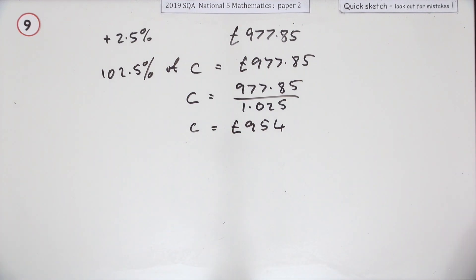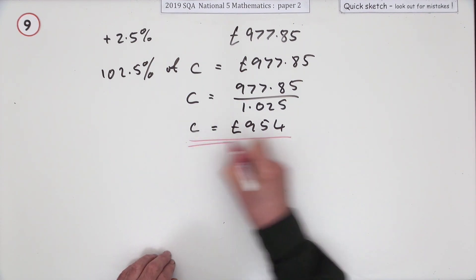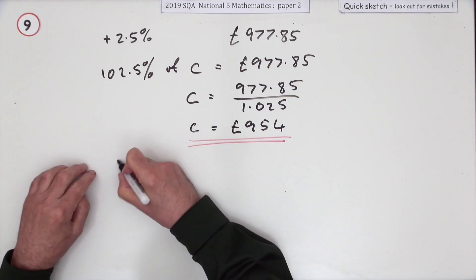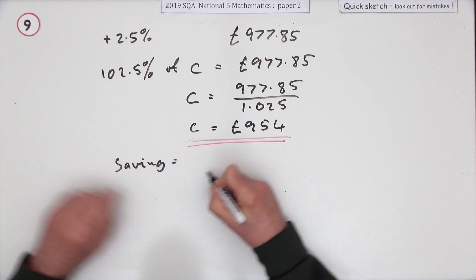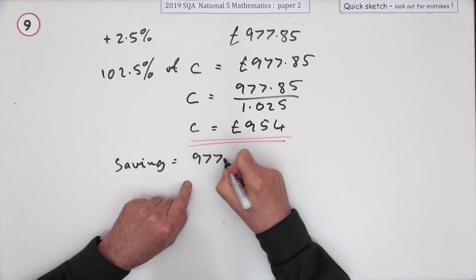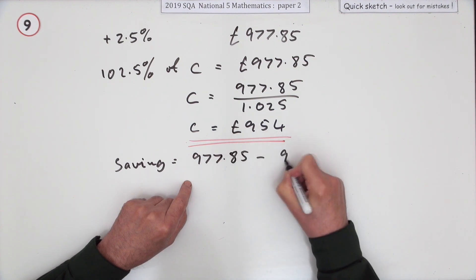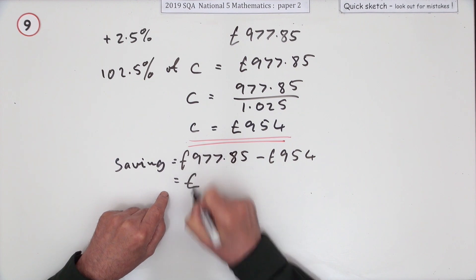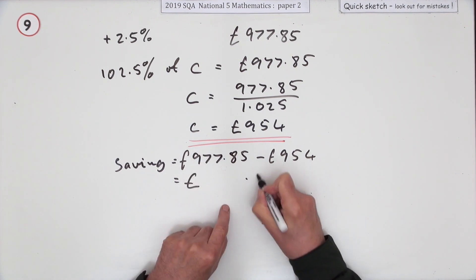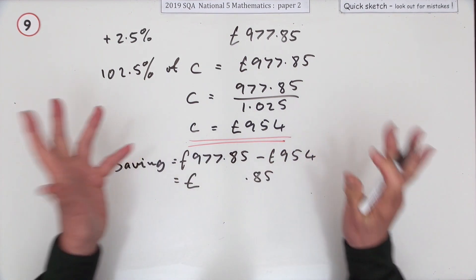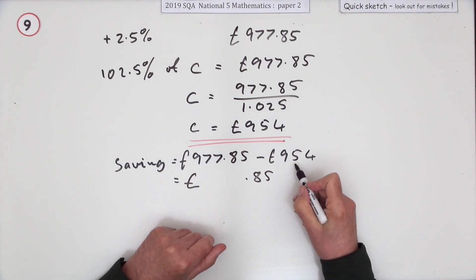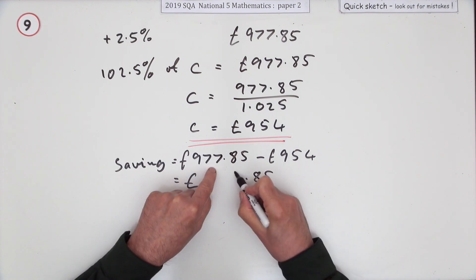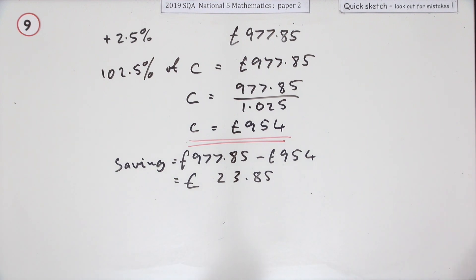Which means the saving would have been £977.85 minus £954. You could do that without a calculator, but might as well use the calculator for this paper two. That's £23.85.